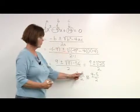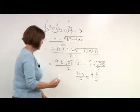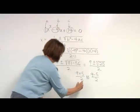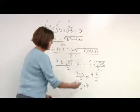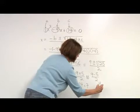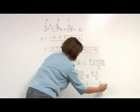This one gives us 14 over 2, or 7. This one gives us 4 over 2, or positive 2.